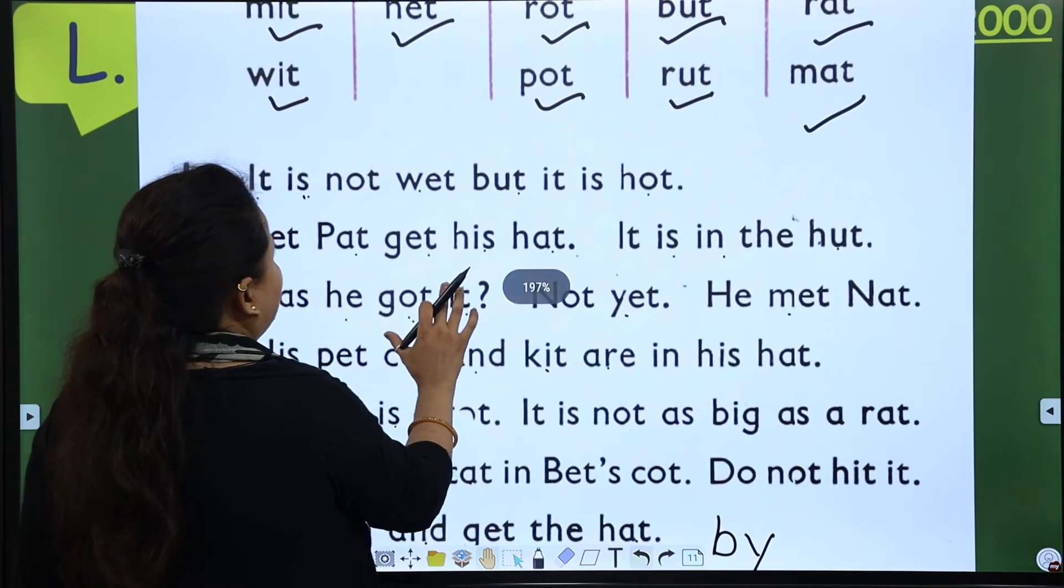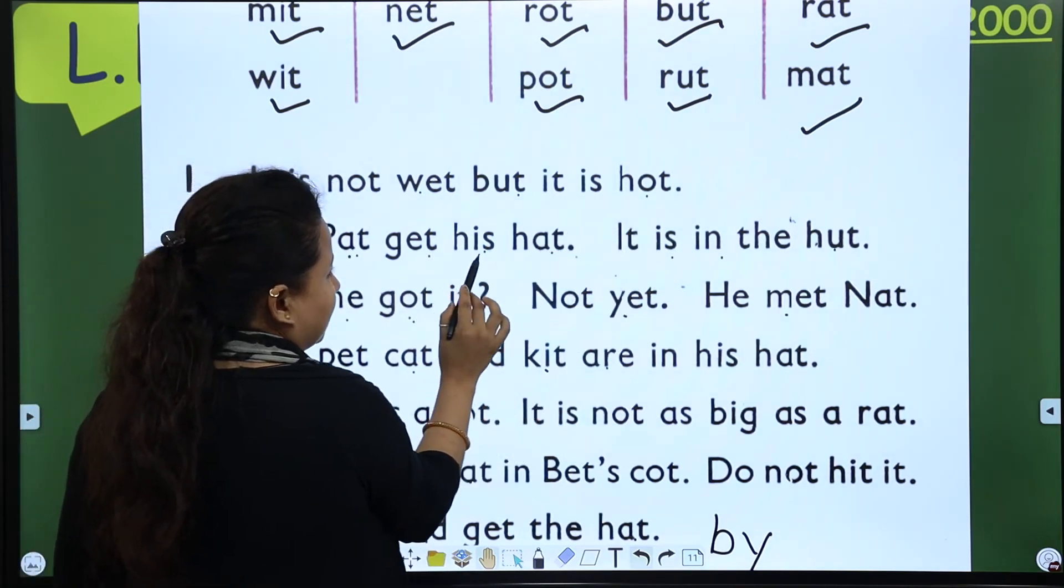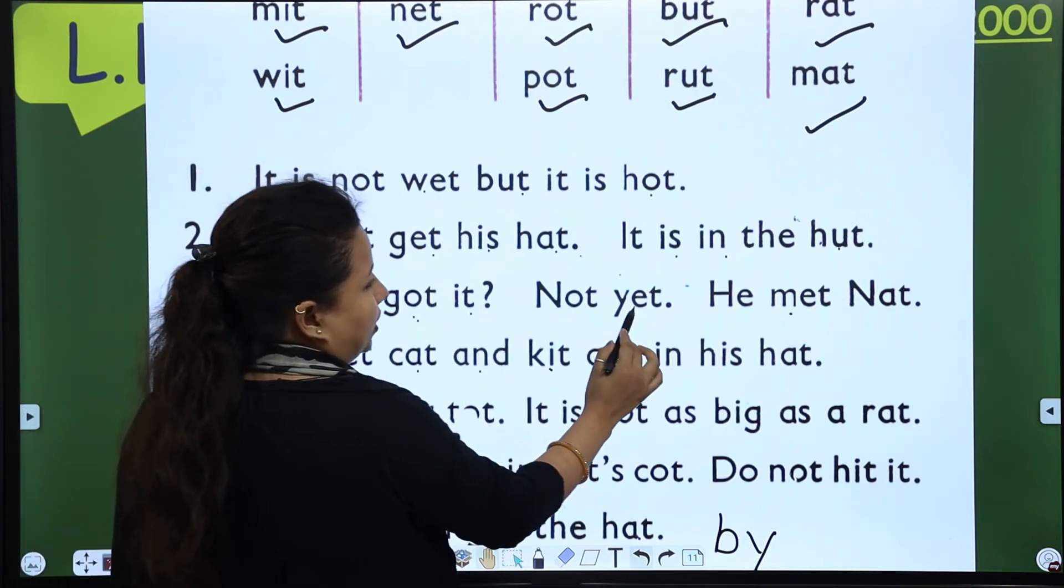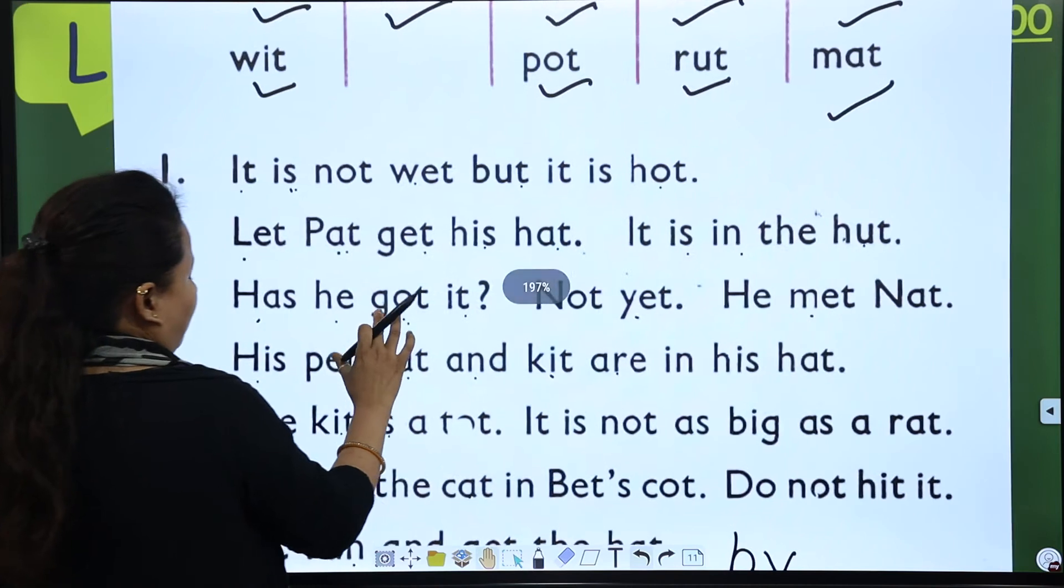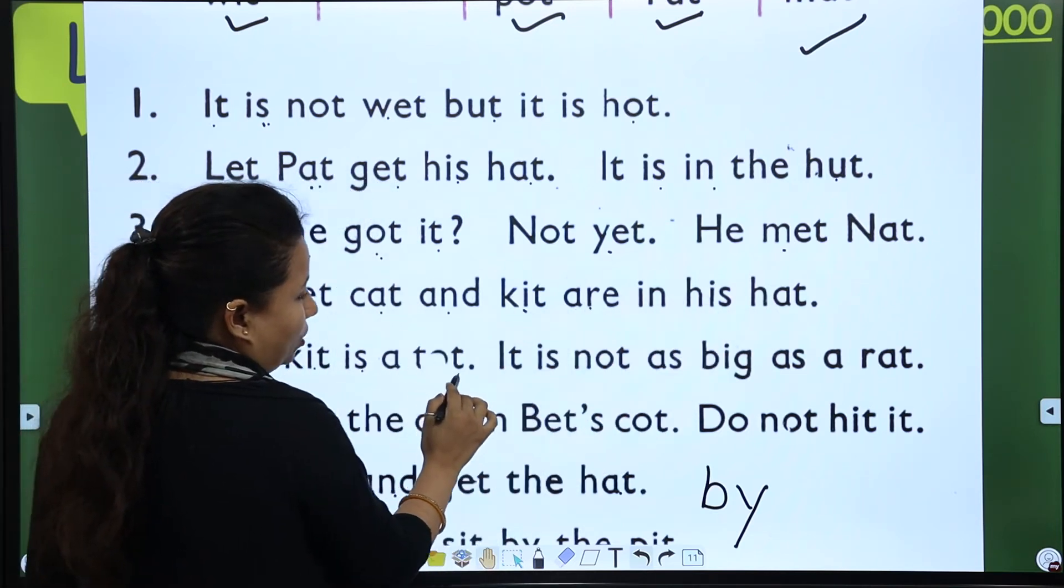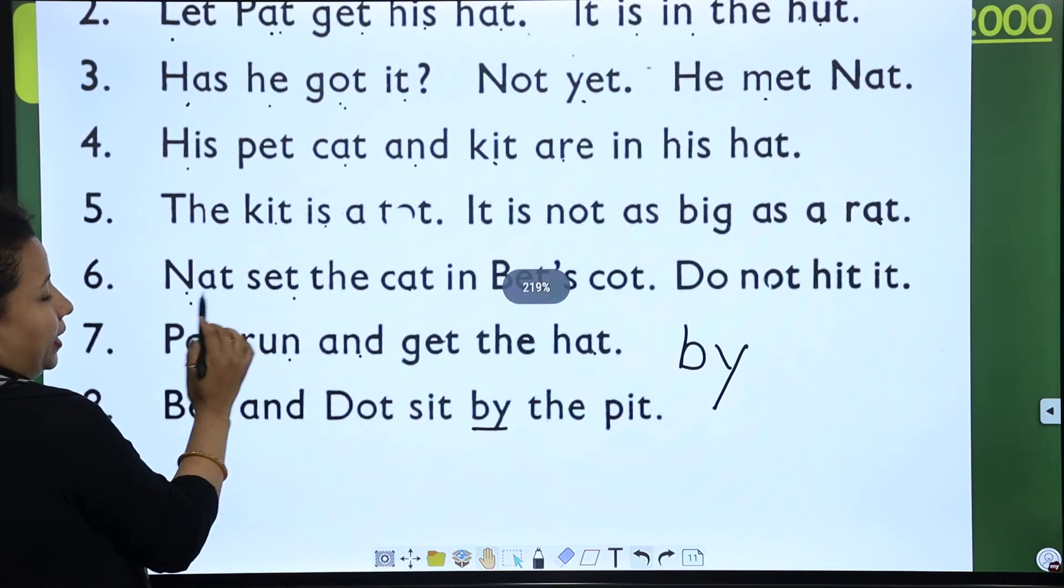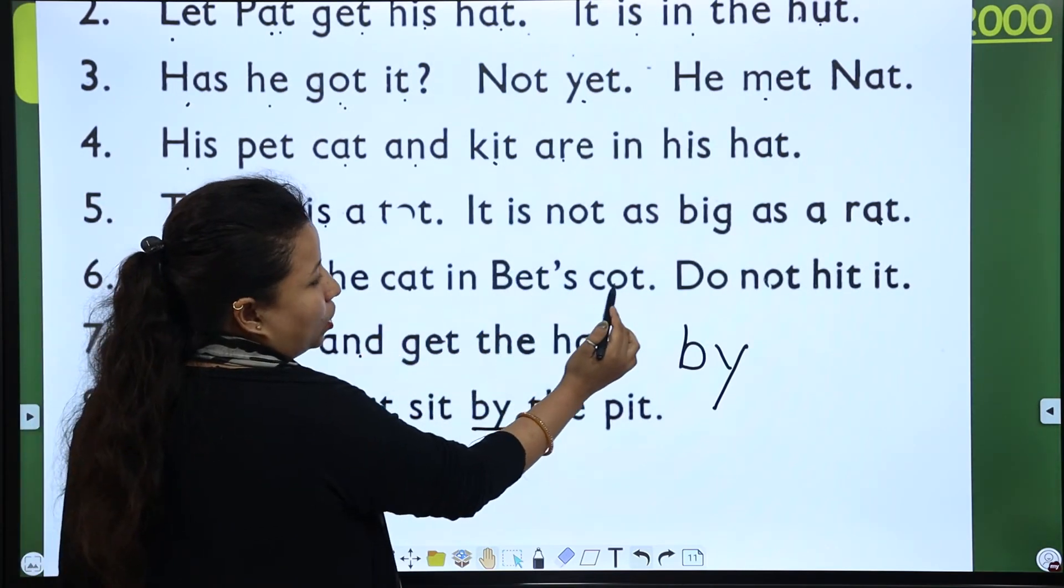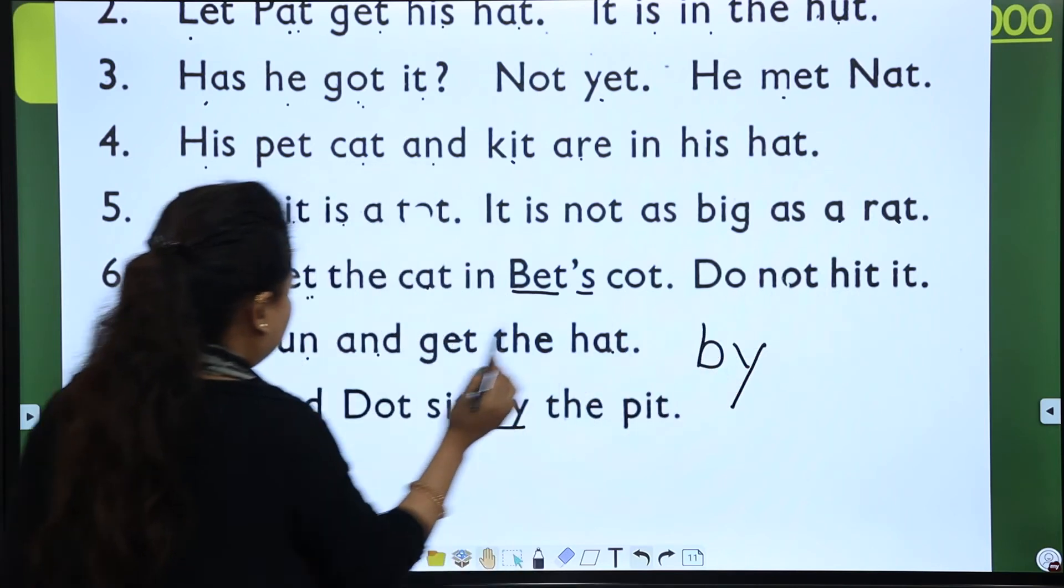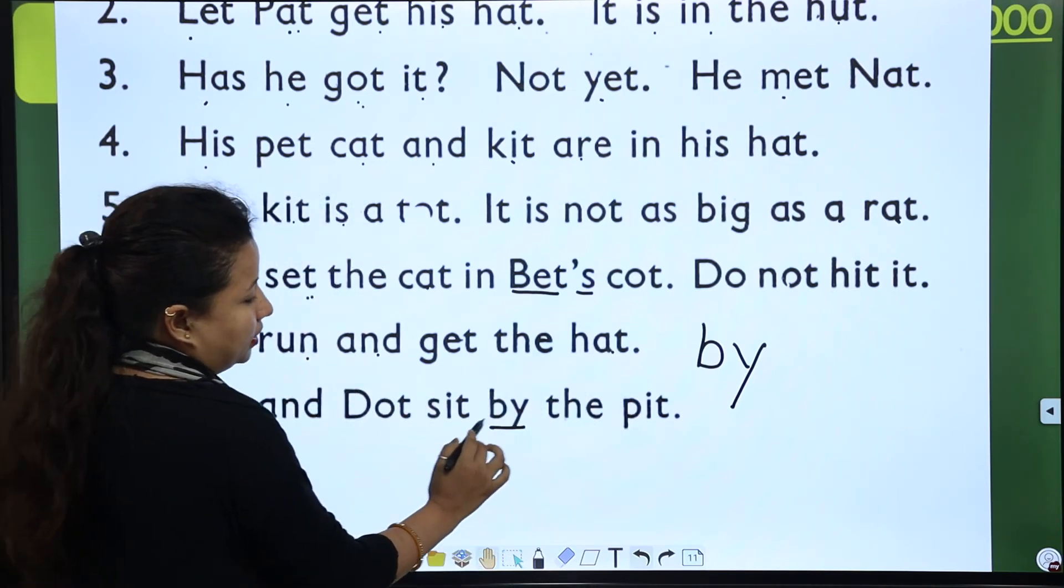Now take a look again. It is not wet, but it is hot. Let Pat get his hat. It is not as big as a rat. Mat, let's say cat. Do not hit it. Pat, run and get the hat. Bet and dot sit by the pit.